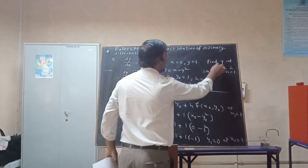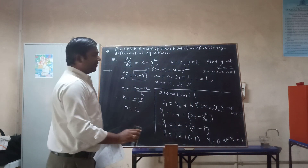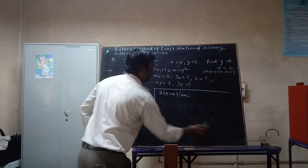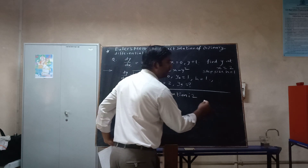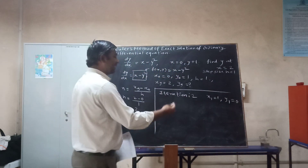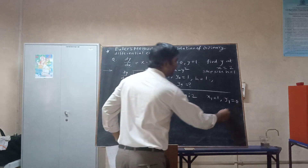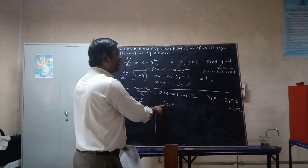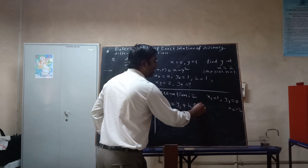But we want the value of y at x=2, so we must move to the second iteration. For the second iteration, the values at the end of the first iteration are x₁=1 and y₁=0. We use these as the base for the second iteration. We want y₂, corresponding to x₂ = x₁ + h = 1 + 1 = 2.